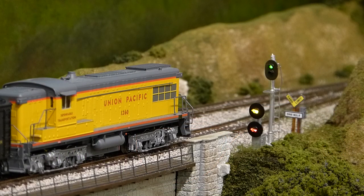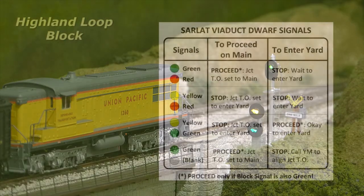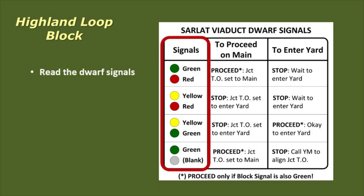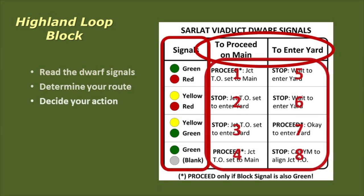The block signal reported whether the block was occupied, but operators also had to interpret the two dwarf signals as shown on this matrix. With two dwarf signals and multiple routes through the block, there were eight combinations of signals that the operator had to understand.